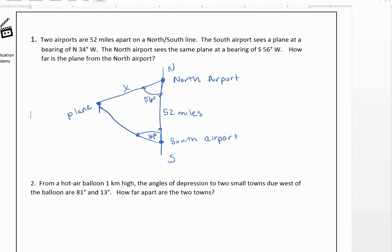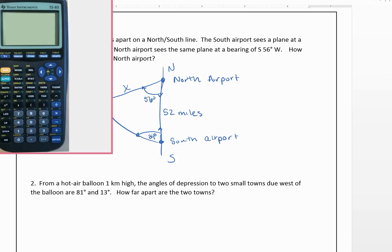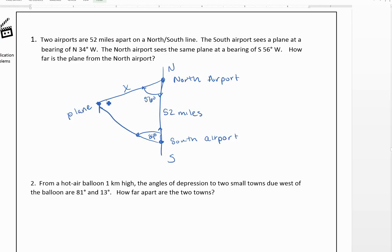Now, the first thing we can do is find out what this angle is, and if on our calculator we do 180 minus 56 minus 34, we see that that's actually a right angle.